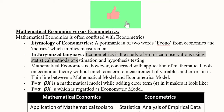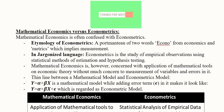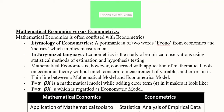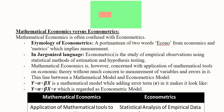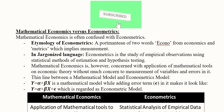In more technical language, econometrics is the study of empirical observations using statistical methods of estimation and hypothesis testing. Empirical observations are real-life data gathered through surveys and observation. Statistical methods can include regression, correlation, and other statistical tools. We employ these tools for the sake of estimation and to test hypotheses developed by theorists — for example, we can test the law of demand or the paradox of thrift.